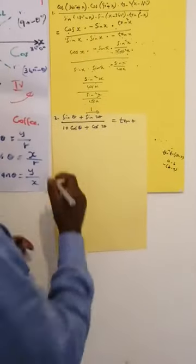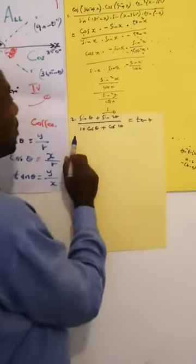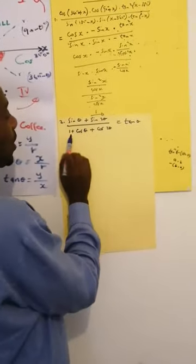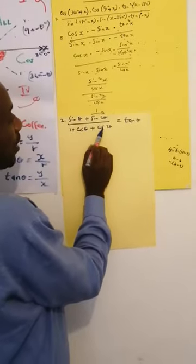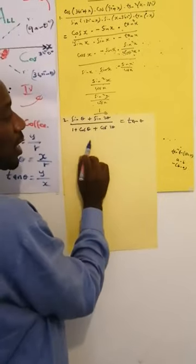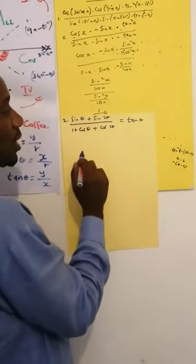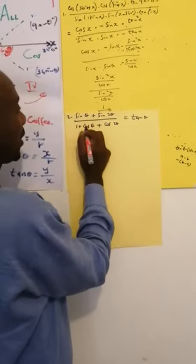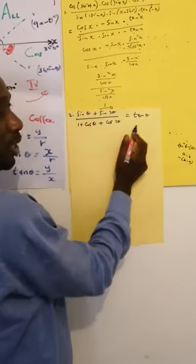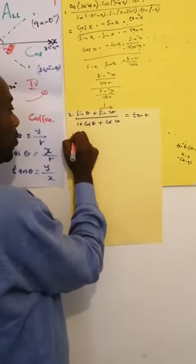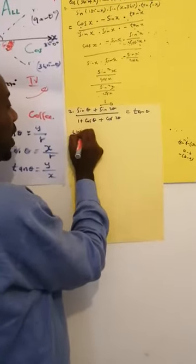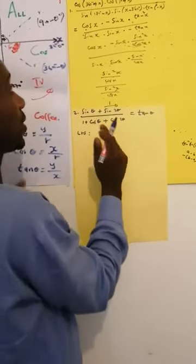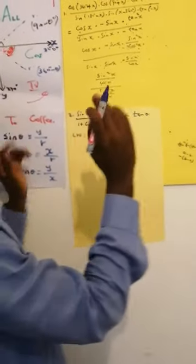We are going to number 2. Number 2 is: (sin θ + sin 2θ) / (1 + cos θ + cos 2θ) = tan θ. We are proving with left-hand side equal to right-hand side. When I start with the left-hand side, you cannot just prove this one directly. You take the bigger one.